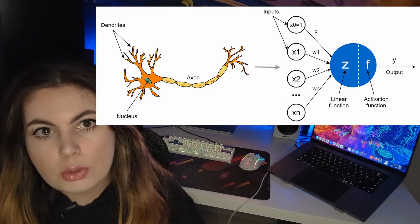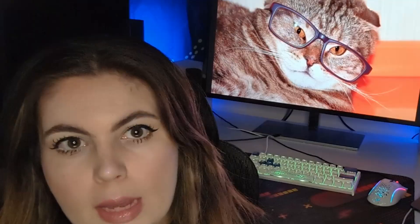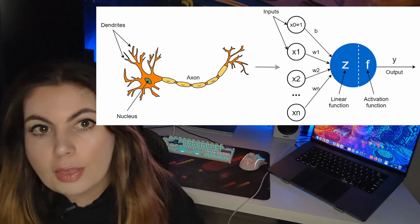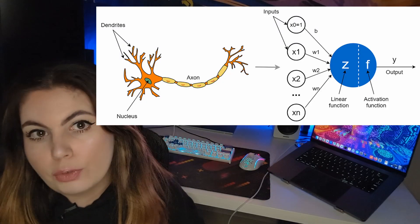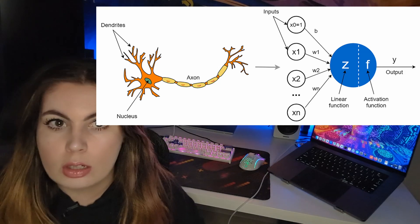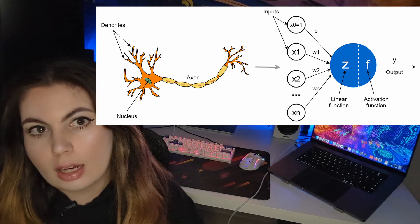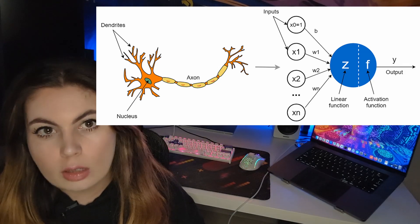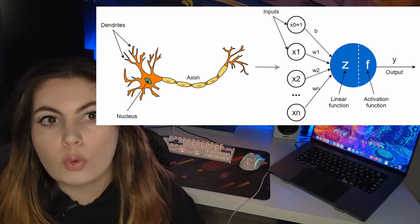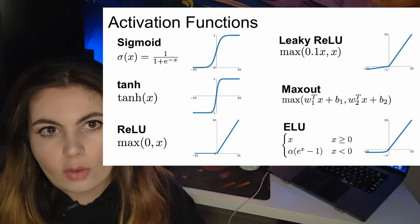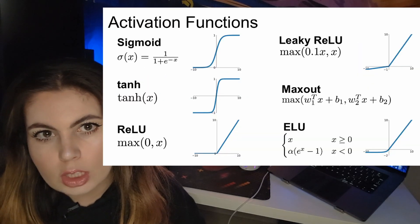In neural networks we have neurons, synapses, weights, and biases. A neuron gets an input and then an activation function, which usually outputs one or zero — whether it's active or not — and then finally an output correlated to a weight and bias set beforehand. Now take a quick look at all these activation functions and tell me which one looks the most simple to you.